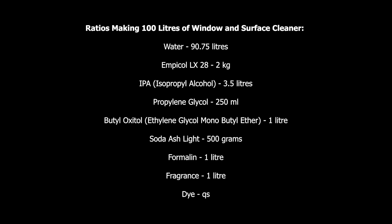Butyl oxytone should be 1% of the total volume — that is 1 liter of butyl oxytone. Next is soda ash/lye at 0.5% of the total volume — 500 grams of soda ash/lye. Then formalin, our preservative, at 1% of the total volume — 1 liter of formalin, to give a better shelf life to our product. The next ingredient is fragrance at 1% of the total volume, which is 1 liter of fragrance.